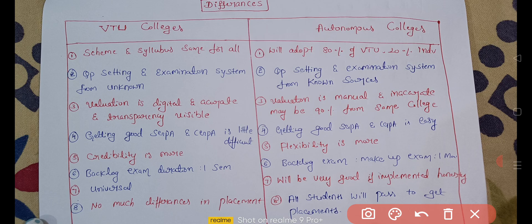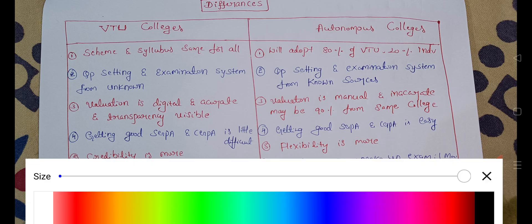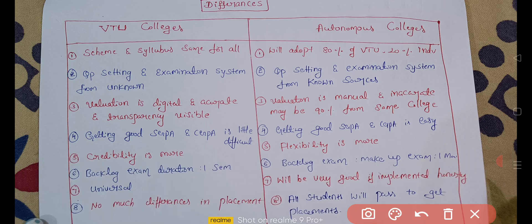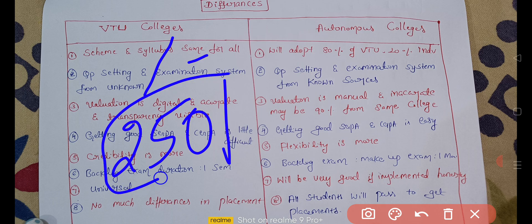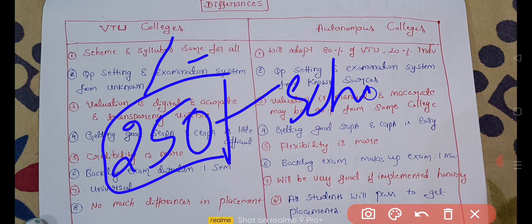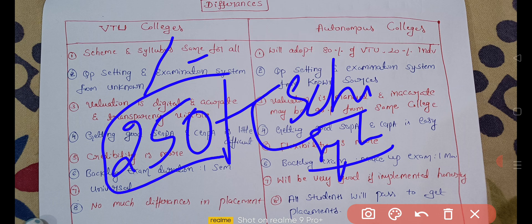The first point is about scheme and syllabus. For VTU-affiliated colleges, the scheme and syllabus is the same for all affiliated VTU colleges. In Karnataka, there are 255 VTU-affiliated engineering colleges, and all 255 colleges follow the same scheme and syllabus.